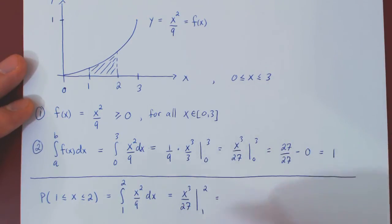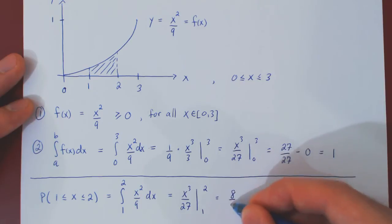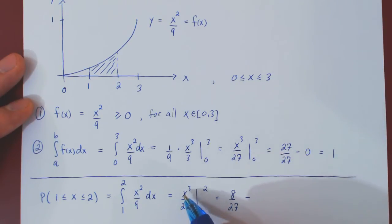So at 2, we get 2 cubed, which is 8. So we get 8 over 27. Minus the function when x is 1, but 1 cubed is 1. So 1 over 27.